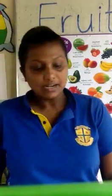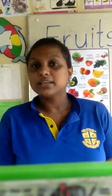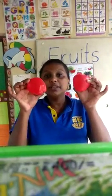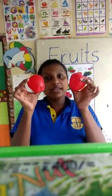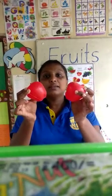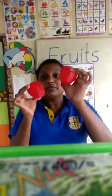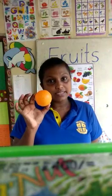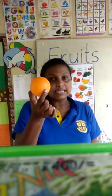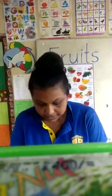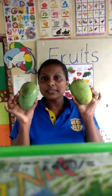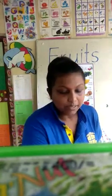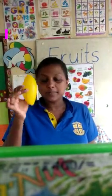Now we have learnt our fruits. Now I am going to ask you some questions. What is the colour of these apples? You can identify them by looking at the colours. Red colour — red apple. What is the colour of this orange? The colour is also orange. What is the colour of mangoes? Green colour. It becomes yellow also — then we can eat sweet mangoes.